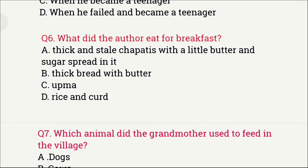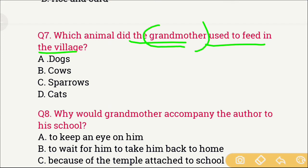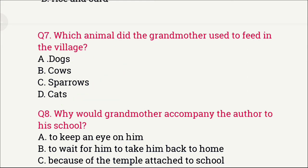Question number 7: Which animal did the grandmother feed in the village? The options are: A) Dogs, B) Cow, C) Sparrows, and D) Cat. The right answer is option A, which is Dogs.